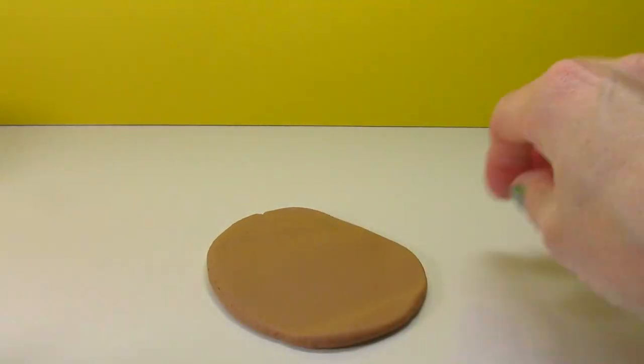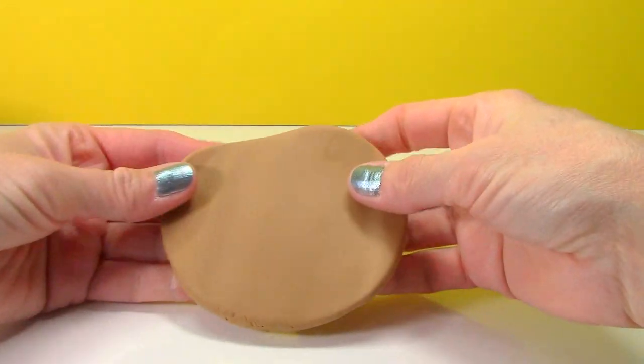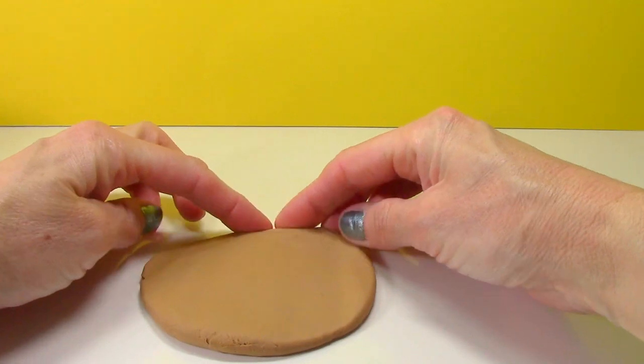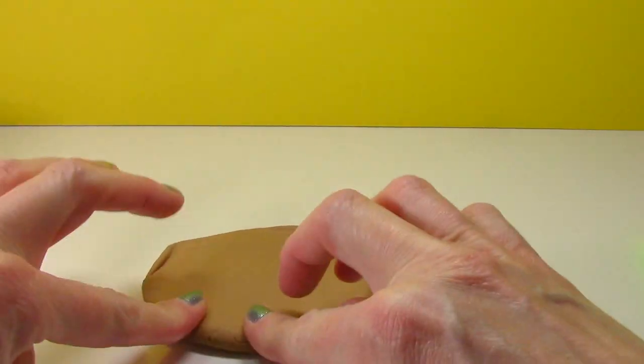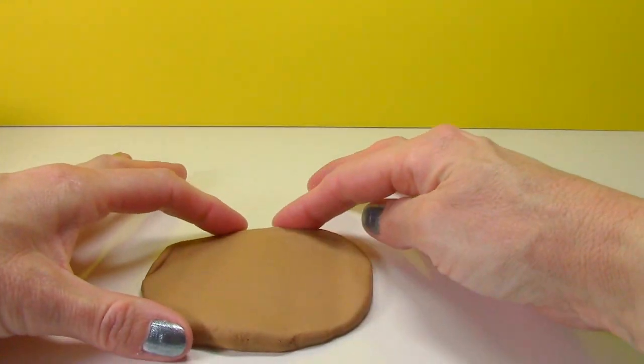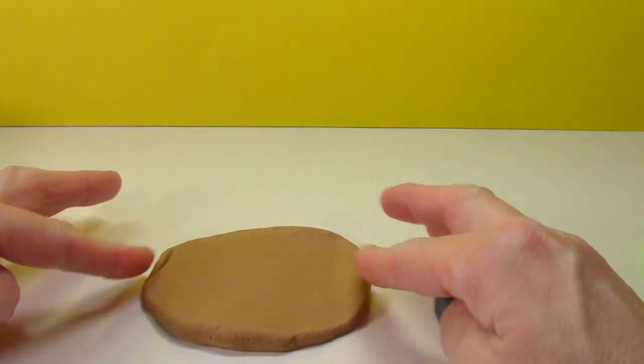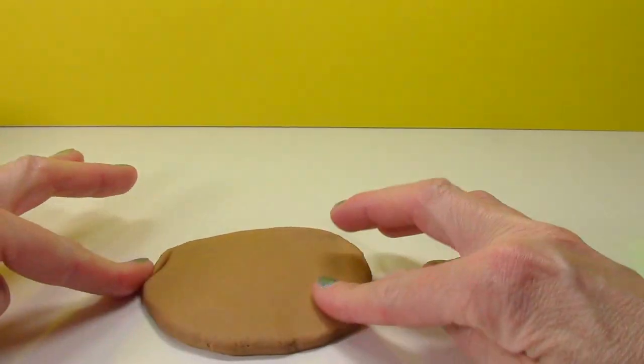Then I'm just going to kind of shape it with my fingers. You want it to be sort of like a rectangle because we want it to look more like a bun than a taco. And you want it pretty thick.